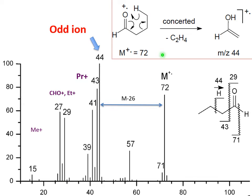All these products will be cation radicals. So how does it happen? We have a six-membered cyclic transition state: hydrogen jumps onto the oxygen, and C₂H₄ disappears from here. As a result, you have a double bond forming here, an OH, and hydrogen sitting on the oxygen. This is the McLafferty rearrangement.